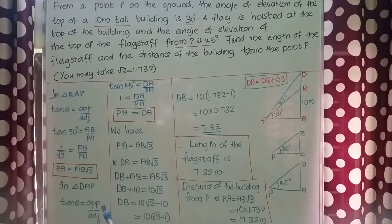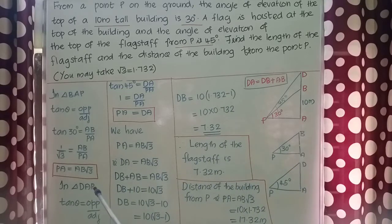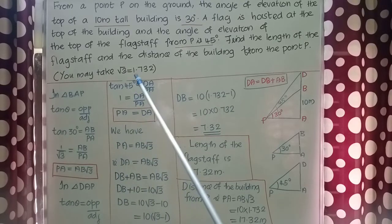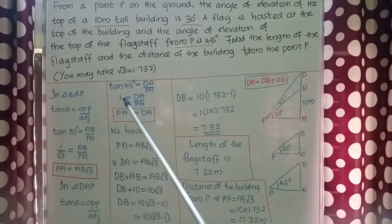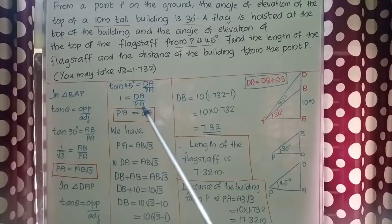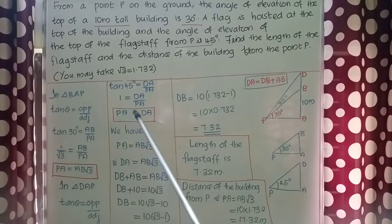Now let us take the ratio in the second triangle, DAP. In triangle DAP, tan θ equals opposite side by adjacent side. That is, tan 45° = DA / PA. Tan 45° is 1, so we get 1 = DA / PA. Cross multiplying, we get PA = DA.